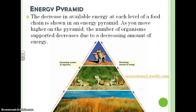Energy Pyramid: the decrease in available energy at each level of a food chain is shown in an energy pyramid. As you move higher on the pyramid, the number of organisms supported decreases due to a decreasing amount of energy.